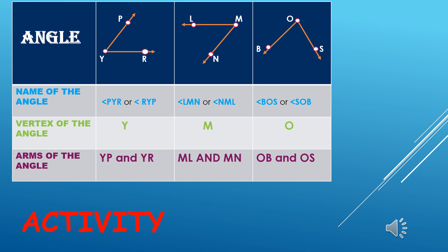Similarly, we have one more angle which can be read as angle BOS or angle SOB. So now it is clear that the vertex of the first angle is Y, the second one is M, and the third one is O.